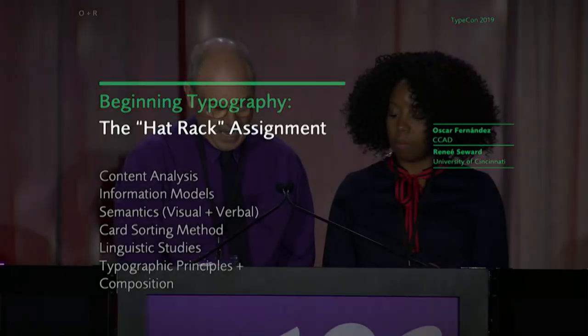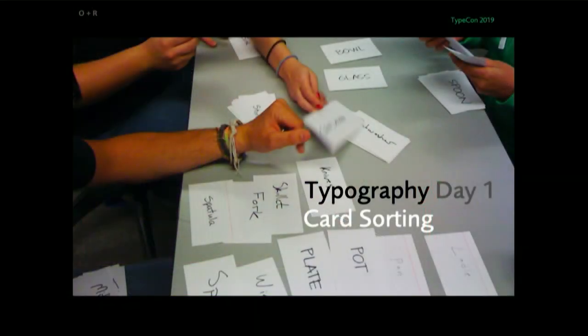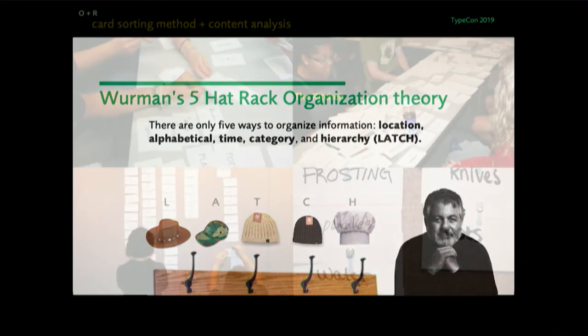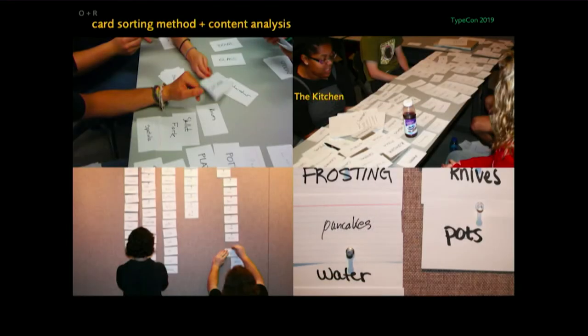Content analysis and studying semantics — this is day one of typography for us. It begins with a card sorting exercise. We take teams of four students and ask each one to generate 50 index cards, each with a term or word related to a kitchen theme. We provide them an organization theory by Richard Saul Wurman — his famous LATCH — that there are only finite ways to organize information: Location, Alphabetical, Time, Category, and Hierarchy. As they generate close to 100-200 cards, they're asked to organize them under one of those categories.